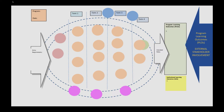The program learning outcomes are on the far right, and they are developed in collaboration with external stakeholders — advisory committees, employers, local employers. There's a very close working relationship with them to make sure that our program learning outcomes reflect what they want our students to be able to do when they graduate. We also have our advisory committees involved in reviewing and revising the program learning outcomes so that they feel very much a part of the process of defining what this degree is.